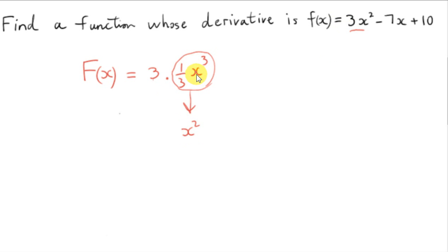So we are doing the reverse of differentiation, of course. Instead of subtracting 1 from the power, we add 1 to the power. And instead of multiplying in front by the power, we're dividing by the new power. So the new power is 3, so we're dividing by 3. That's why we have 1 third, and the 3 is just a constant left in front.